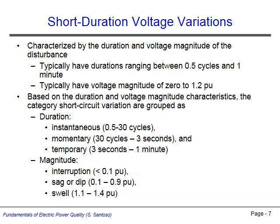If the voltage magnitude falls below 0.1 per unit, the event is called an interruption. If the magnitude falls to between 0.1 and 0.9 per unit, it is a voltage sag, or dip. If the voltage magnitude rises to 1.1 per unit or higher, the event is called a voltage swell. Voltage magnitudes between 0.9 and 1.1 per unit are considered to be within the normal operating range of the power system and are not considered a variation.